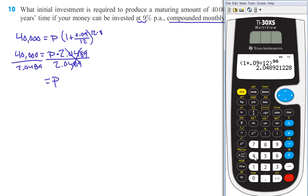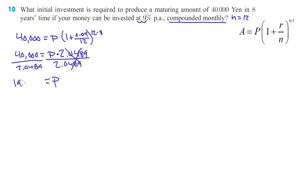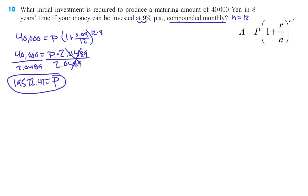We take 40,000 and divide it by 2.0489, and we get that we need to invest 19,522.47 yen. So 19,522.47 yen need to be invested in order to end up with 40,000 yen 8 years later at 9% compounded monthly. Alright, that's all there is for this. If you have any further questions, please feel free to ask in class. Thanks.